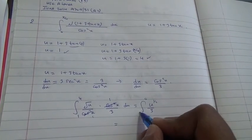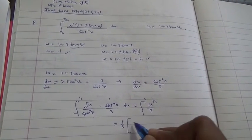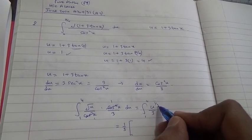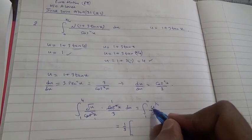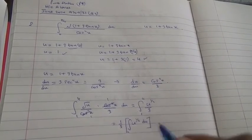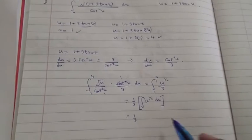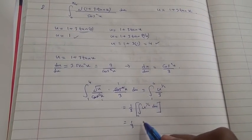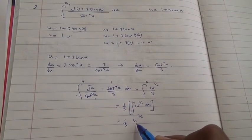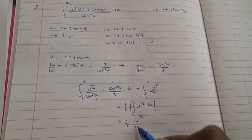Basically, we can send the 3 on the other side. We can say 1 third, and then inside, we're going to integrate u to the power of half. How can we integrate u to the power of half? Quite easy. So, 1 third, therefore, u to the power of half is, you just add 1, that's going to become u to the power of 3 over 2. Divide by the new power, 3 over 2, so divide by 3 over 2.